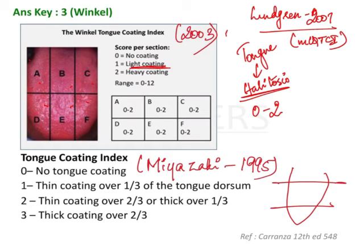In the Winkle index, you grade each section from 0 to 2 based on the amount of coating present, and the total range of the index is 12.